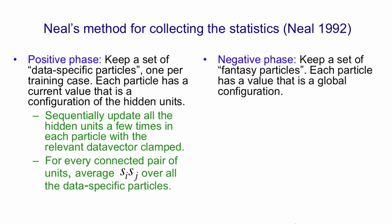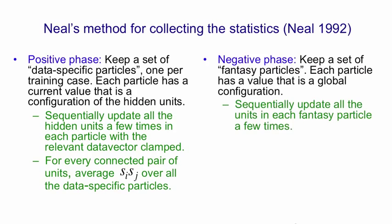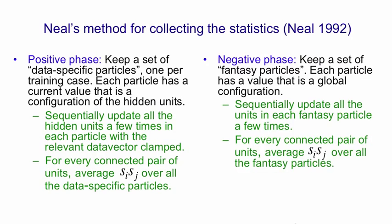In the negative phase, you keep a set of fantasy particles — these are global configurations. After each weight update, you sequentially update all the units in each fantasy particle a few times; now you're updating the visible units as well. For every connected pair of units, you average Si*Sj over all the fantasy particles. The learning rule is then the change in the weights is proportional to the average you got with data minus the average you got with the fantasy particles when nothing was clamped. This works better than the learning rule that Sejnowski and I introduced, at least for full batch learning.